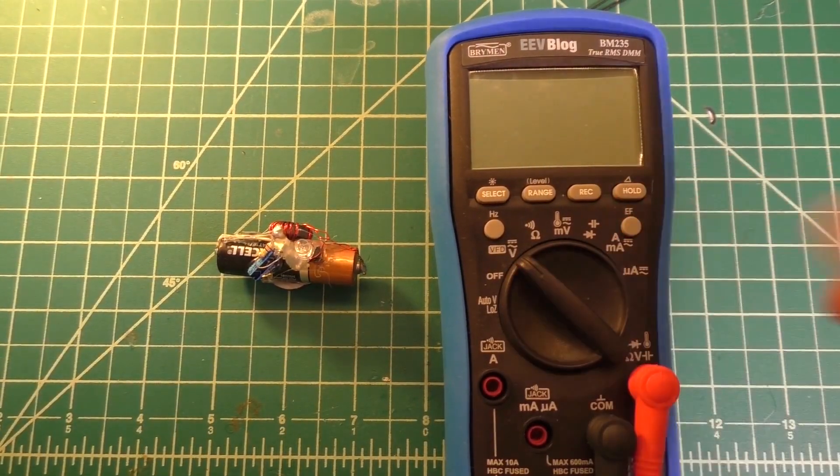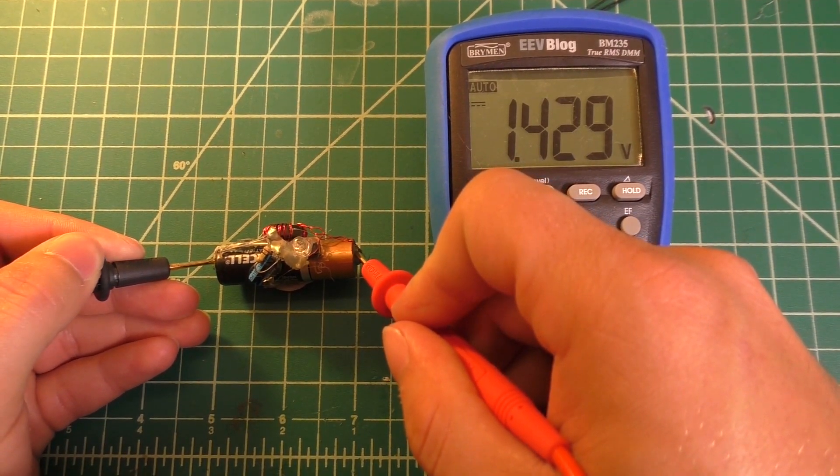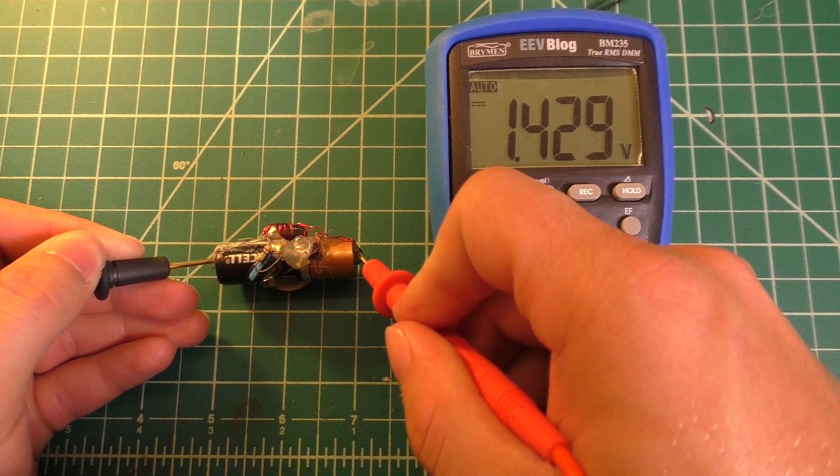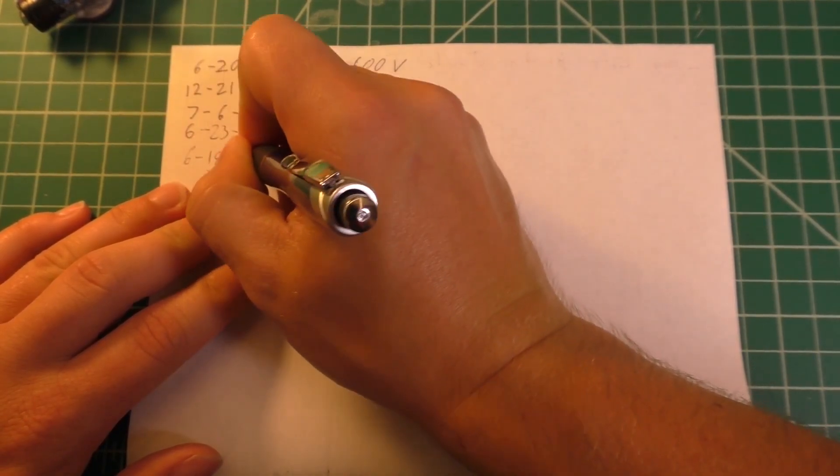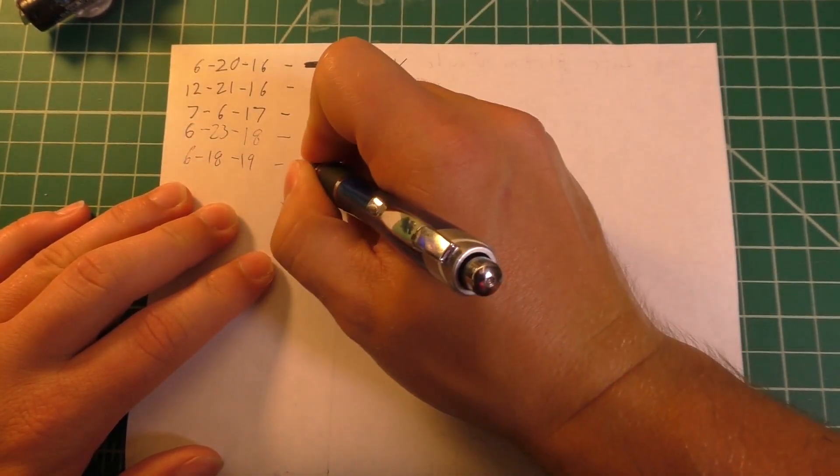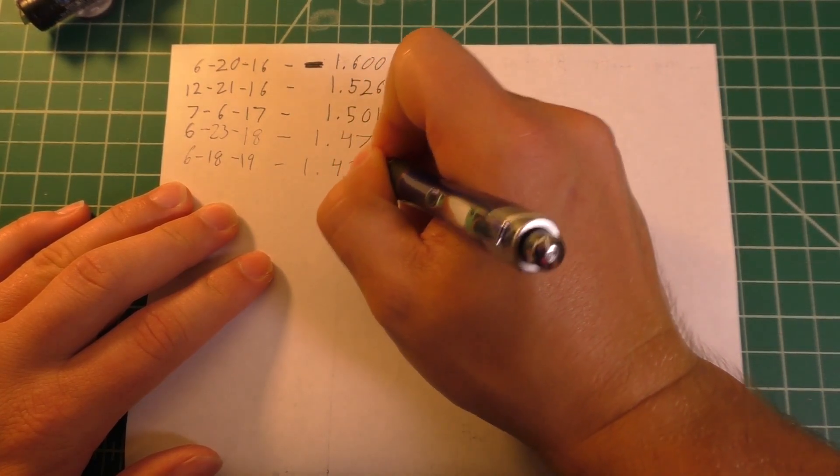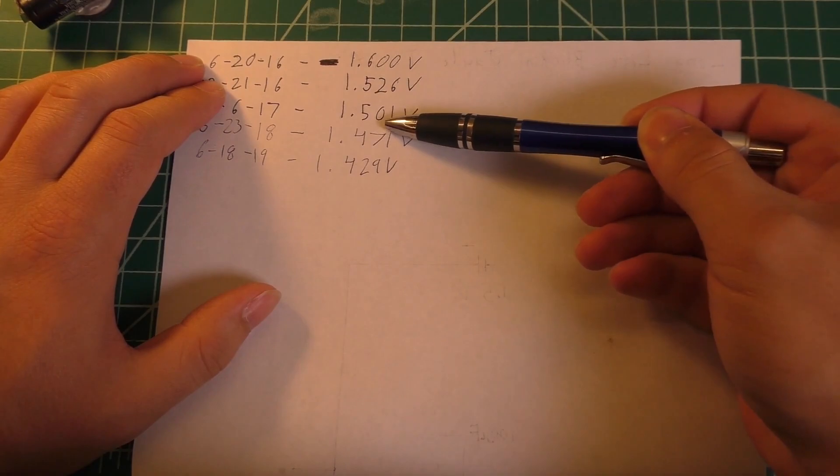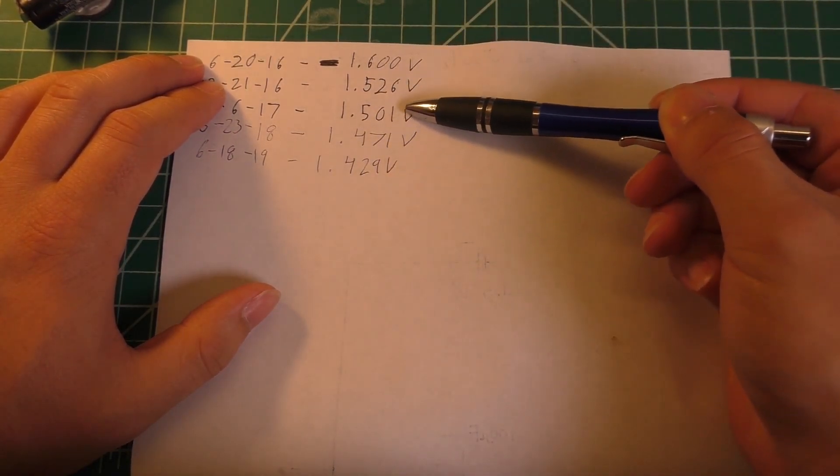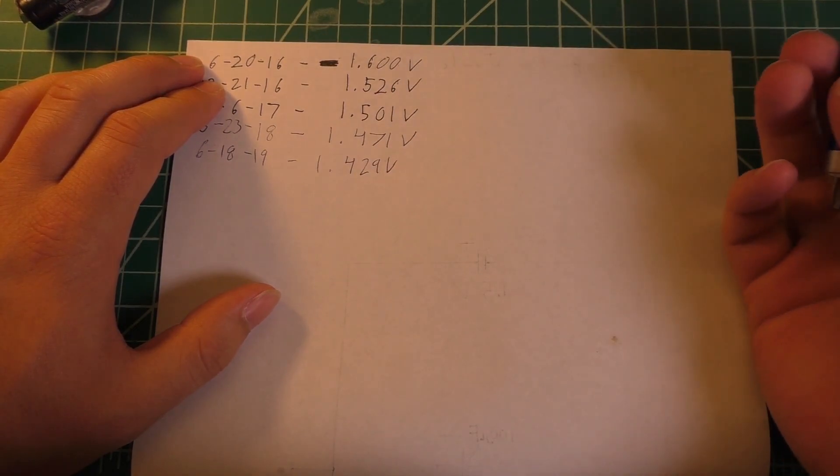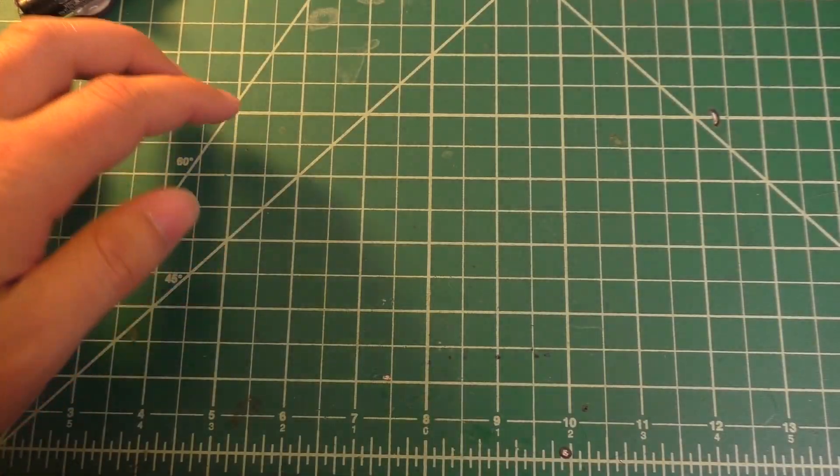All right here we go, let's check this out. We're at 1.429 volts. I'll go ahead and write that on here - today is the 18th of June in 2019, 1.429 volts. So from last year to this year we've lost approximately 40 millivolts in the battery which isn't a whole lot at all, and really with the battery still around 1.4 volts it's still got plenty of life in it.